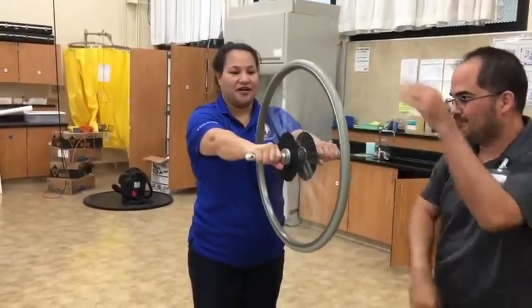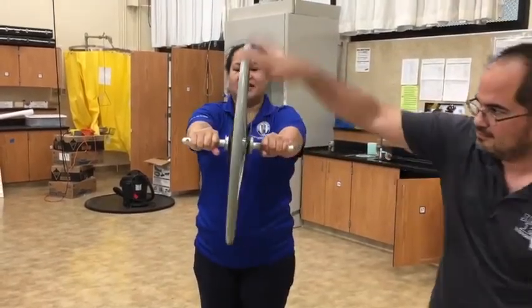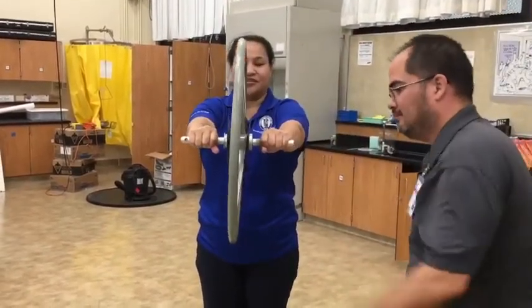Right now, torque is being applied to the bike tire all by itself. I'm giving it a push at a certain radius, so now it has angular momentum.